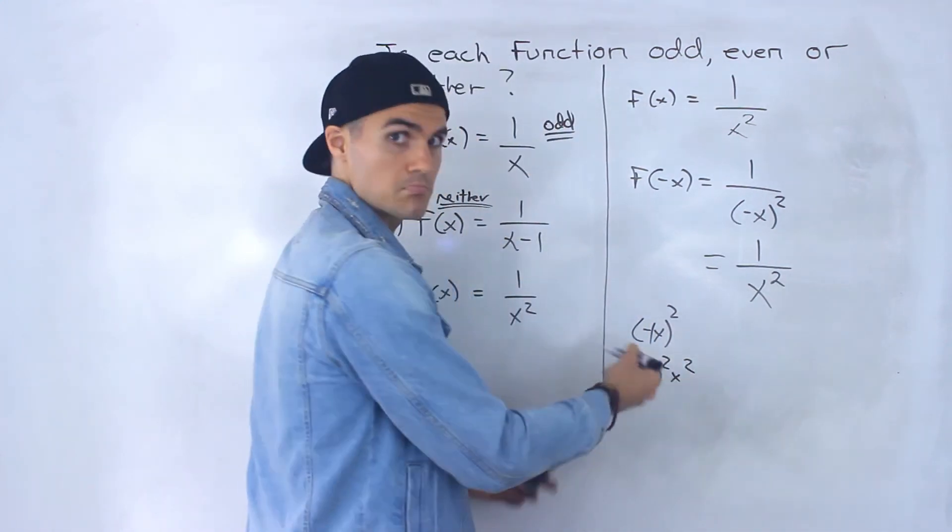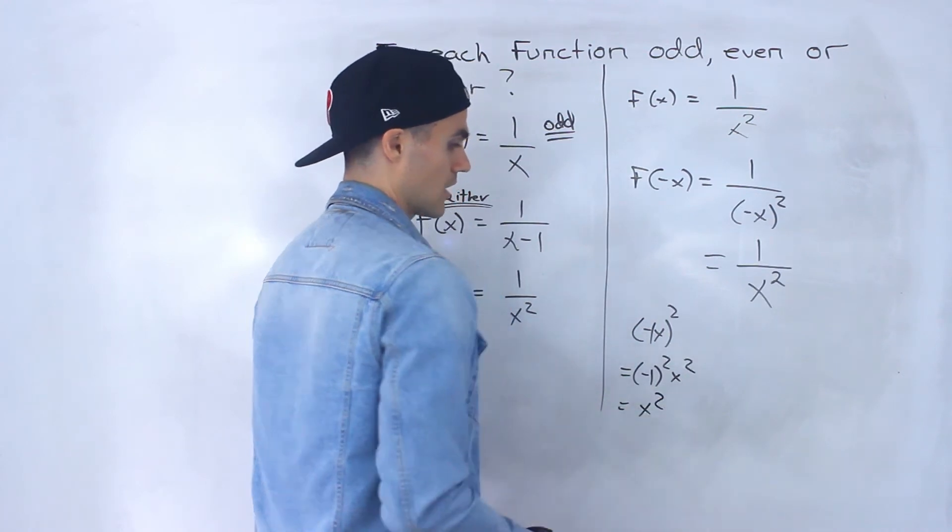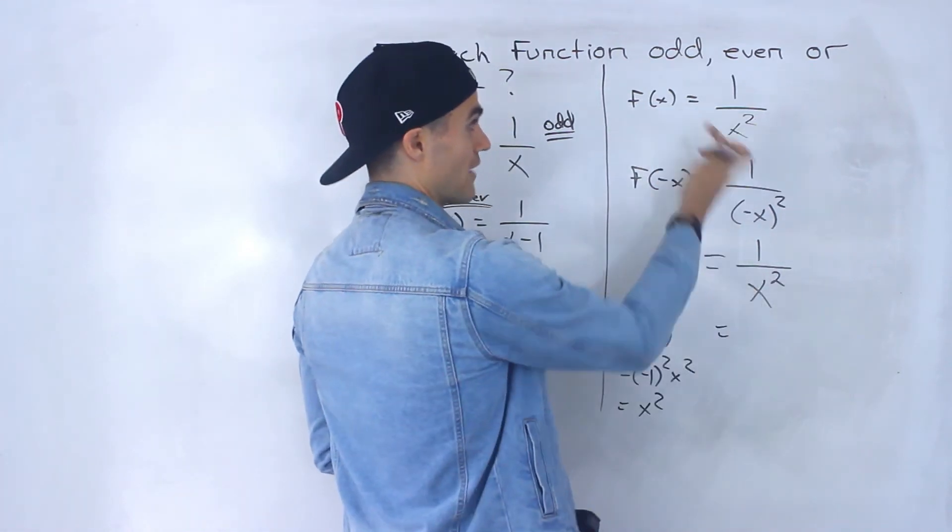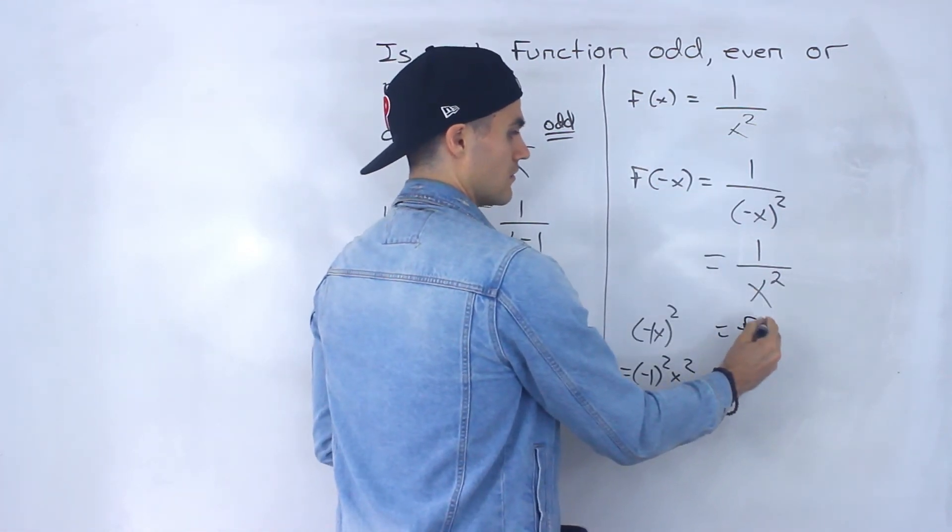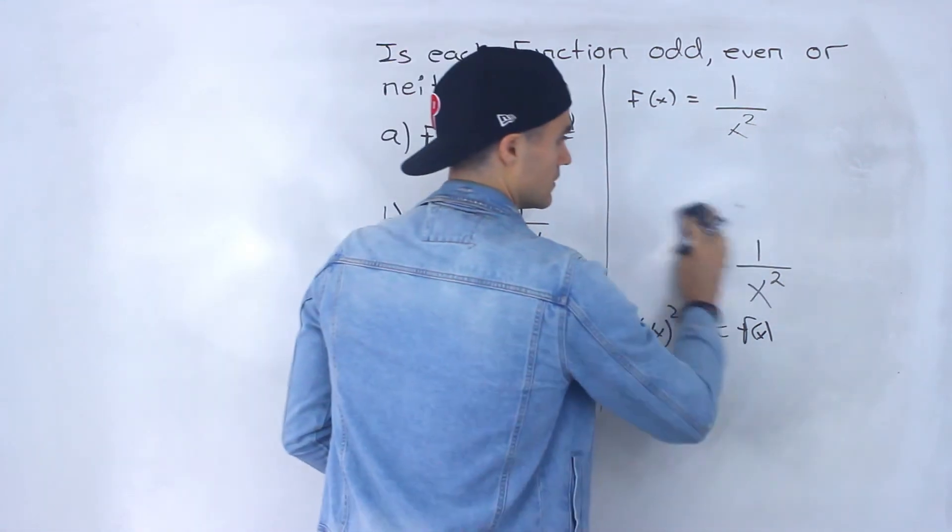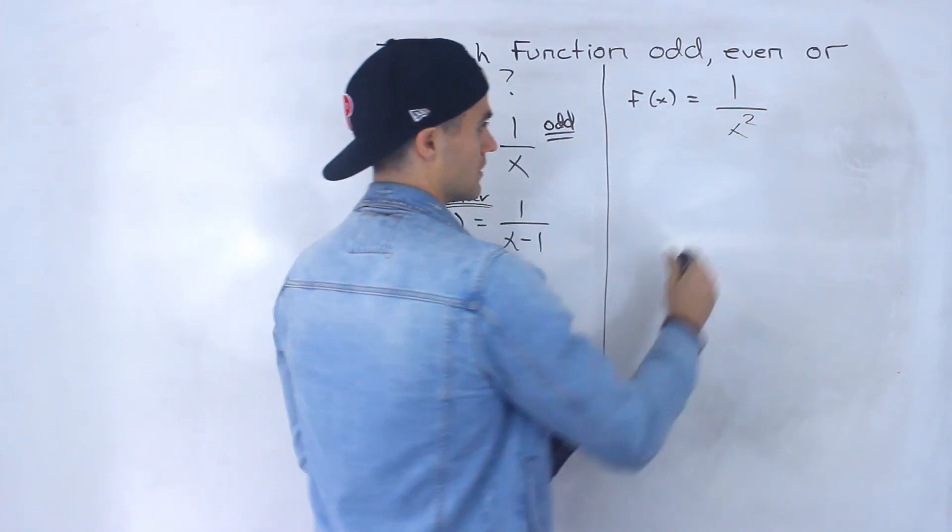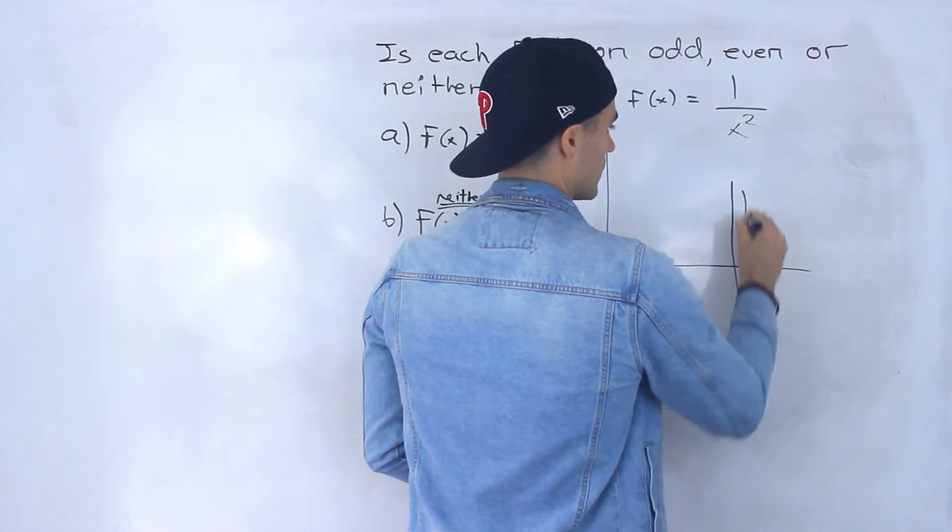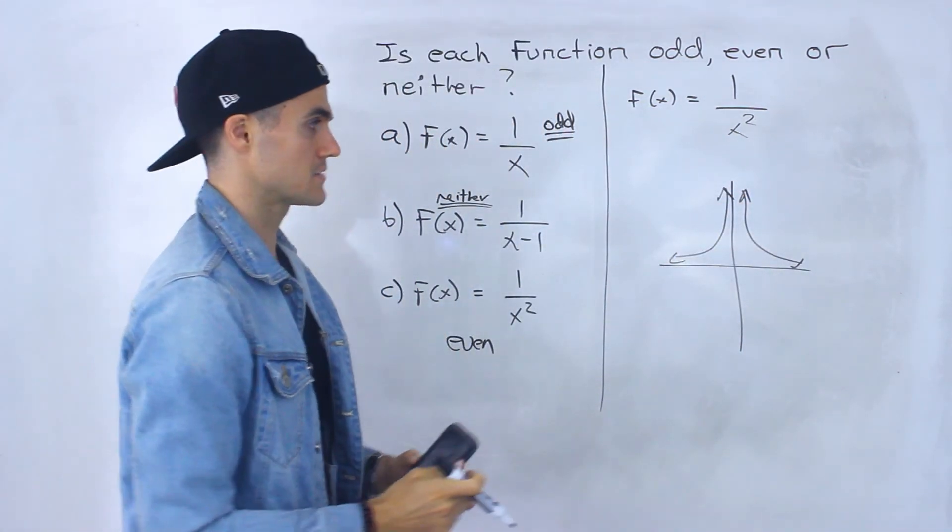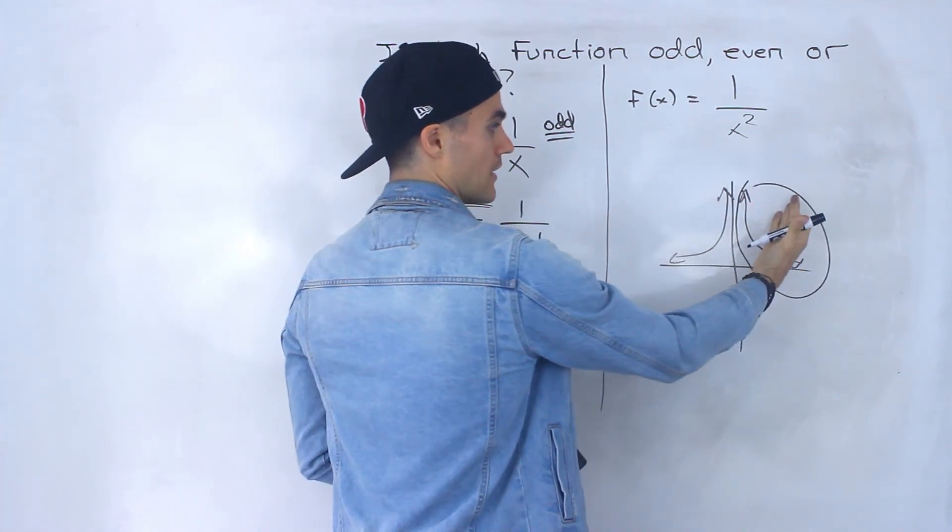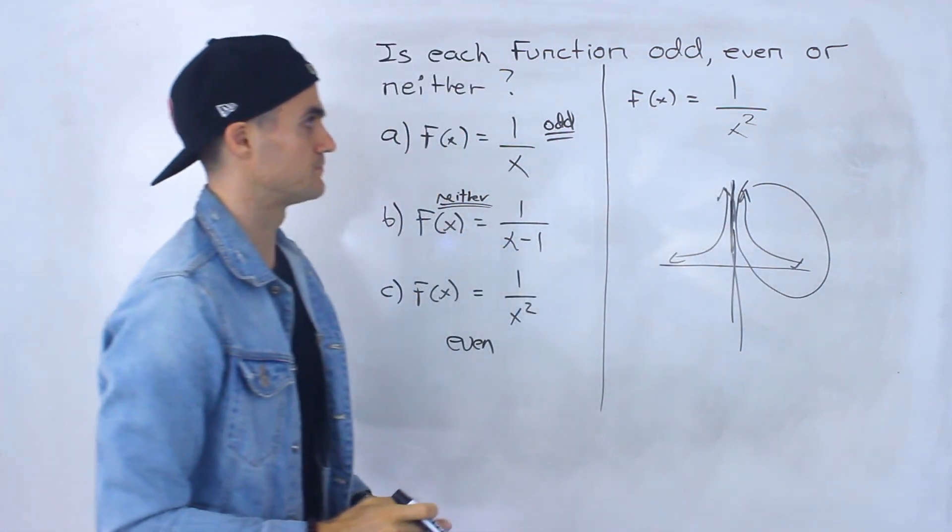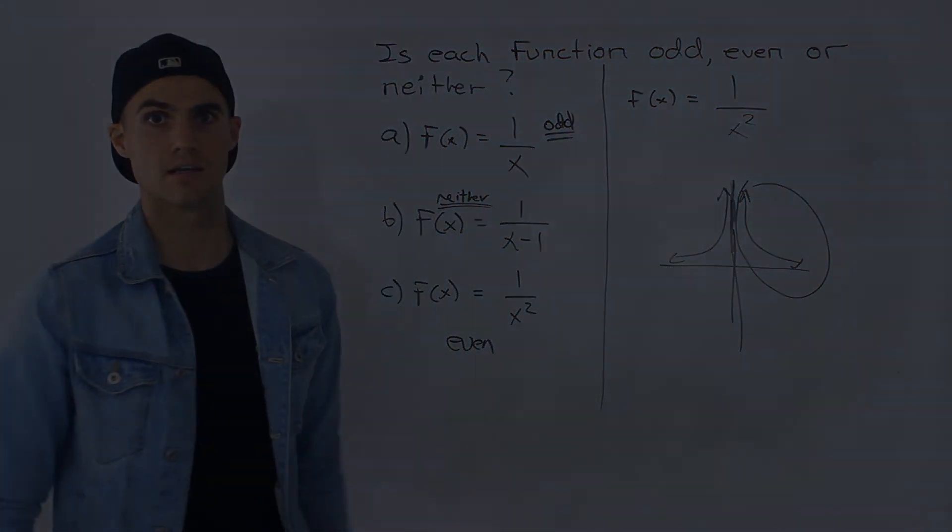Negative 1 squared is just positive 1, and then we just end up with x squared. So notice f of negative x, we made it equal to f of x. And so in this case, this function here is even. And if we were to graph this, you can take this, plug it into Desmos, you'd end up with a graph like that. So notice it has that axis symmetry. If I take this portion and then reflect it on the y-axis, notice I'll end up with that portion, right? So this last function is even.